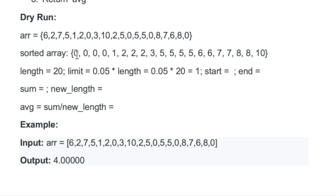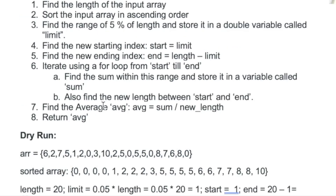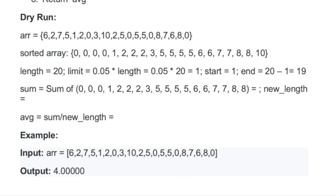We have to remove the smallest one element and the largest one element. The new interval will be: start = limit = 1, and end = length - limit = 20 - 1 = 19. So start is at index 1 and end is at index 19. To find the sum between these two intervals, we use a for loop where i starts from the start variable and iterates till the end variable.